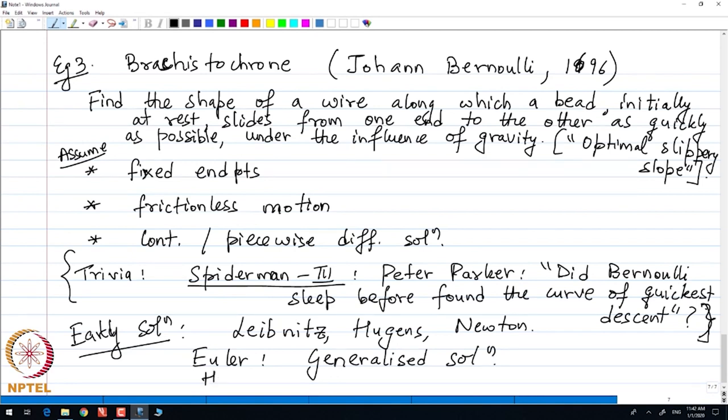Then it was Euler who provided the most general framework of the class of brachistochrone problems. Euler provided the generalized solution to this class of problems. Finally, it was Huygens who discovered that the motion of the problem in brachistochrone is initial condition independent, also known as the isochrone problems.